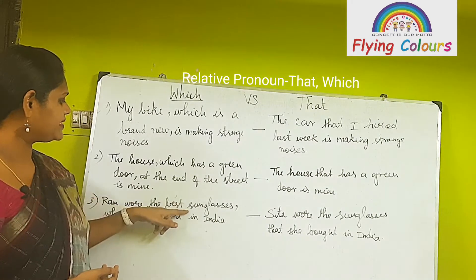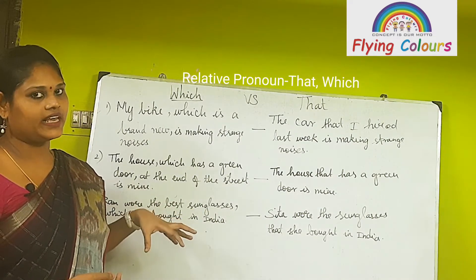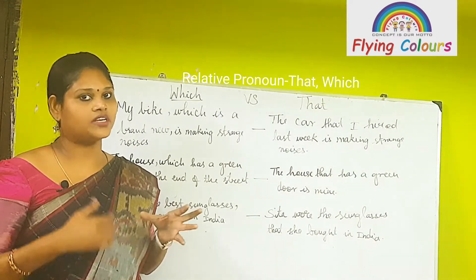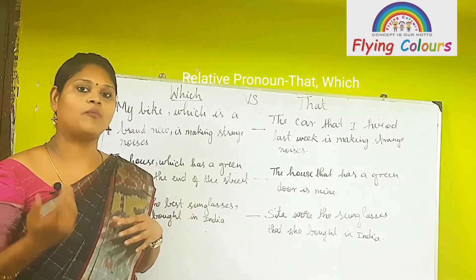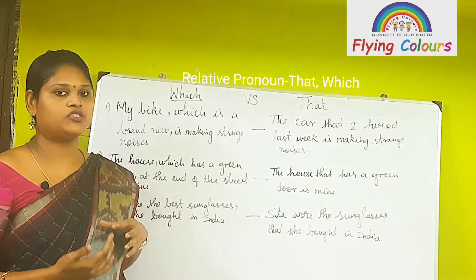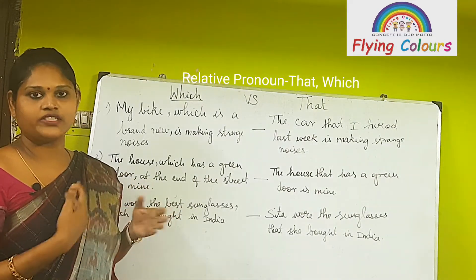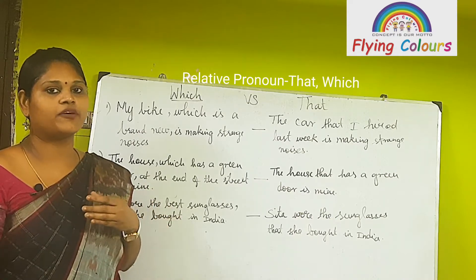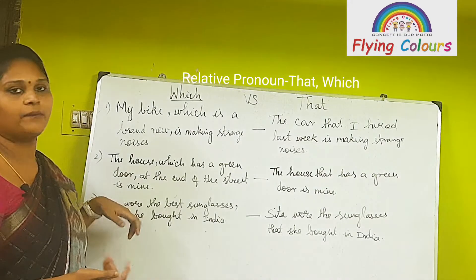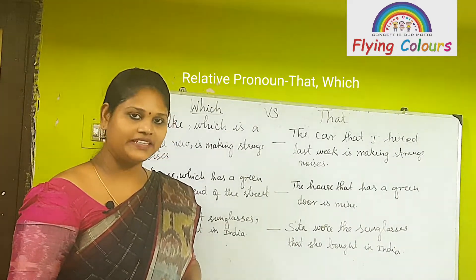'Ram wore the best sunglasses which he bought in India.' In this case, we are giving extra, non-essential information about the subject. The clause 'which he bought in India' gives additional information about the sunglasses. Here, Ram is the subject, and 'which' introduces a non-essential clause.